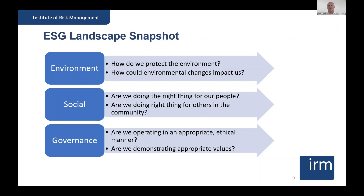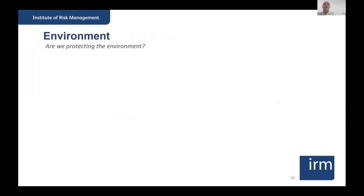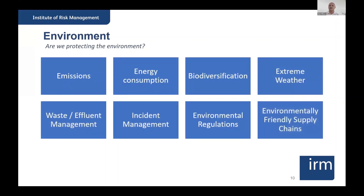Feel free to use the chat box for questions. Let's start with the environment. Are we protecting the environment, and what are the risks we should be thinking about when conducting this ESG risk assessment? I think there are eight useful, clear topics to consider. Starting with emissions: how is our company addressing emissions? Is our emissions rate increasing too much? Are the stats telling us we're doing too much harm to the environment? What is the risk exposure, and what key controls can we implement to reduce our emissions?